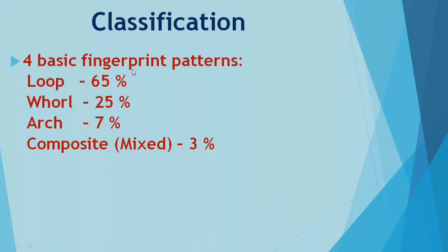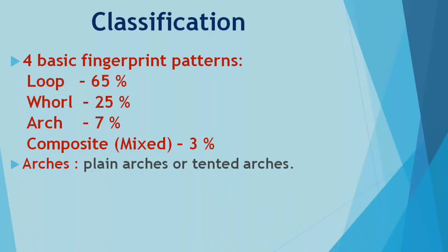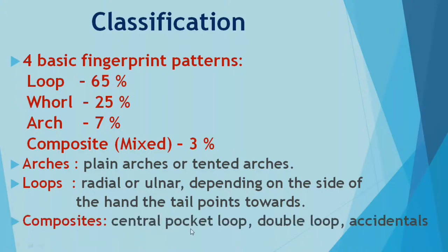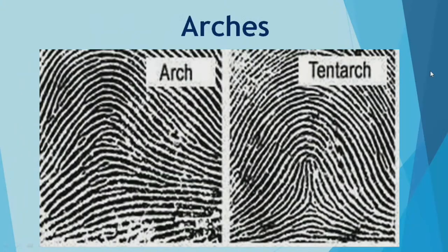For dactylography, there are four basic fingerprint types: Loop, Arch, Whorl, and Composite (also called Mixed). The composite is least common. Arch is the next, followed by Whorl. The most commonly found fingerprint type is Loop — almost 65% — which is frequently asked in MCQs and viva. Arches are either plain arches or tented arches. Loops are either radial or ulnar depending on the side from which the hand and tail points. Composite includes central pocket loop, double loop, and accidental findings.